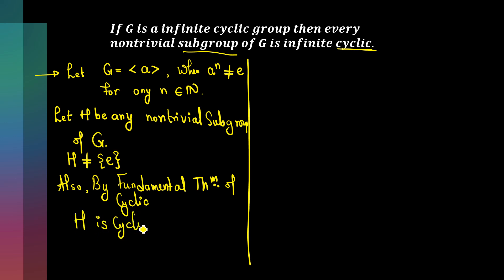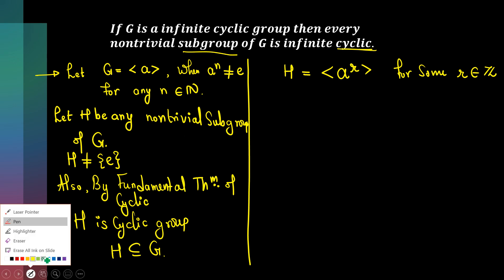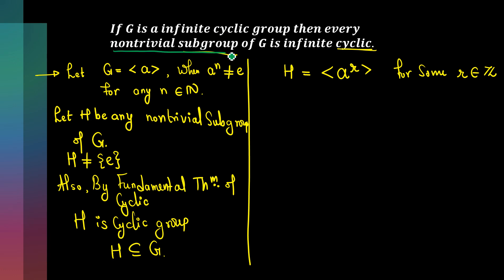Since H is a subset of G, H must be generated by a raised to some r, for some integer r. Since H is a cyclic group and every element of G is a power of a, H is generated by a^r where r is some integer. We just need to prove that this non-trivial subgroup H is infinite. It is automatically cyclic since it is a subgroup of a cyclic group — the only thing left to prove is that H is infinite.